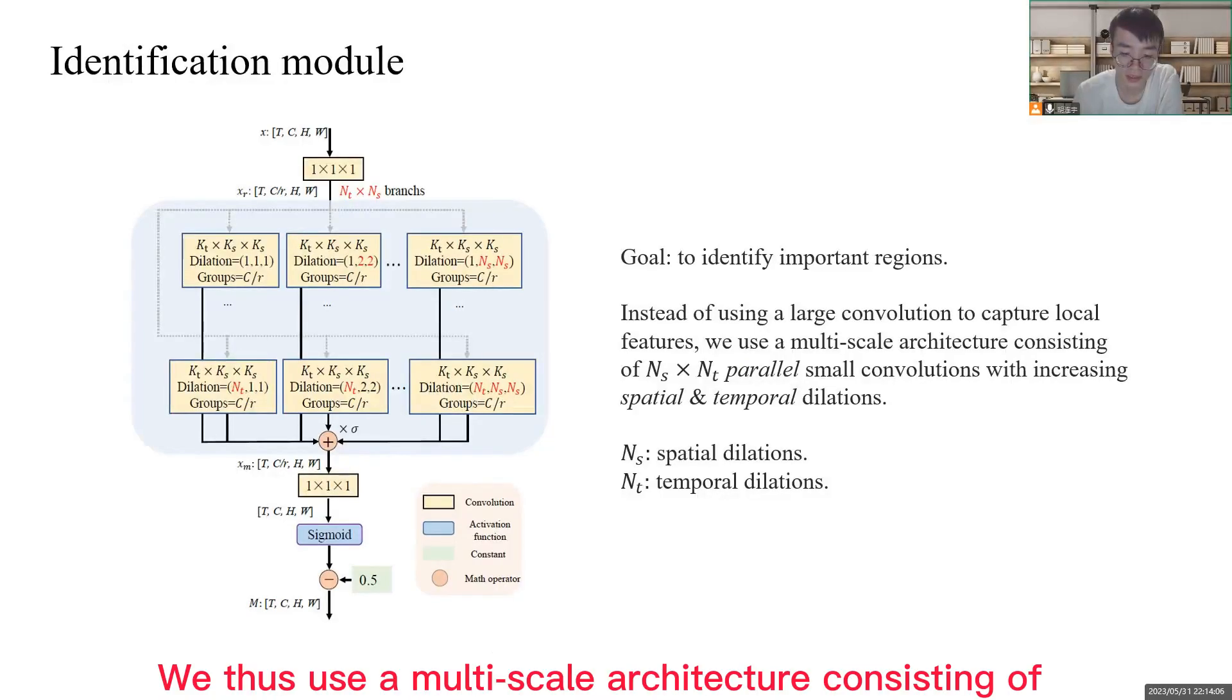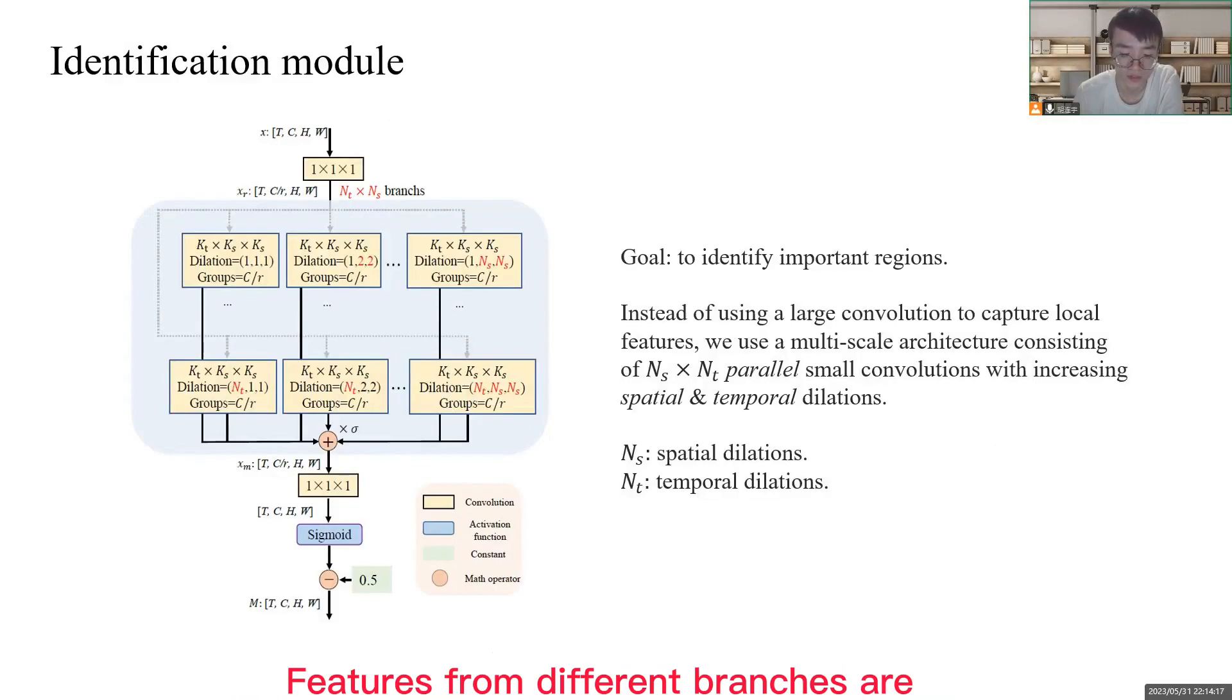We thus use a multi-scale architecture consisting of N_s × N_t parallel small convolutions with increasing spatial and temporal dilations. Features from different branches are added to mix information. The convolution in each branch is depthwise conducted with a reduced intermediate channel to minimize computations. In this case, we can increase the model capacity with reduced computations.